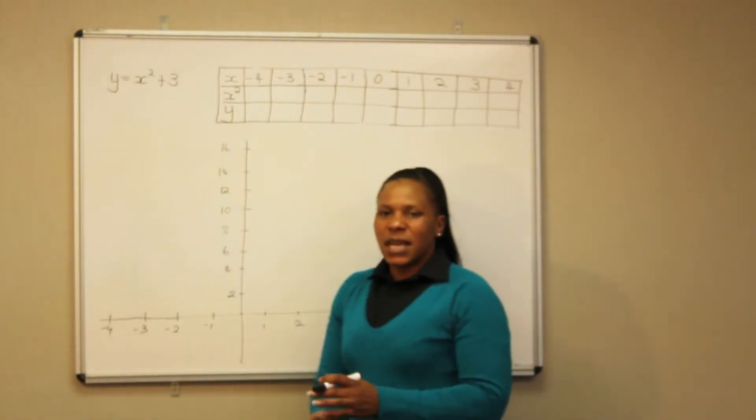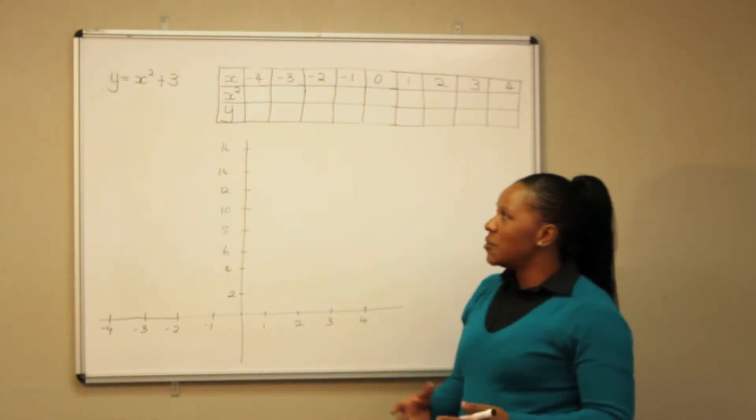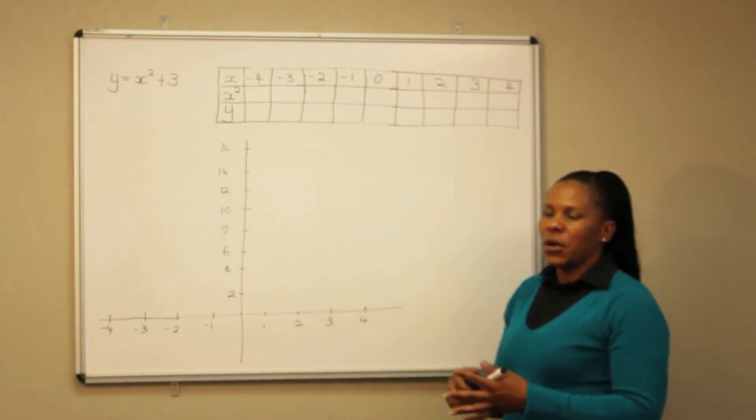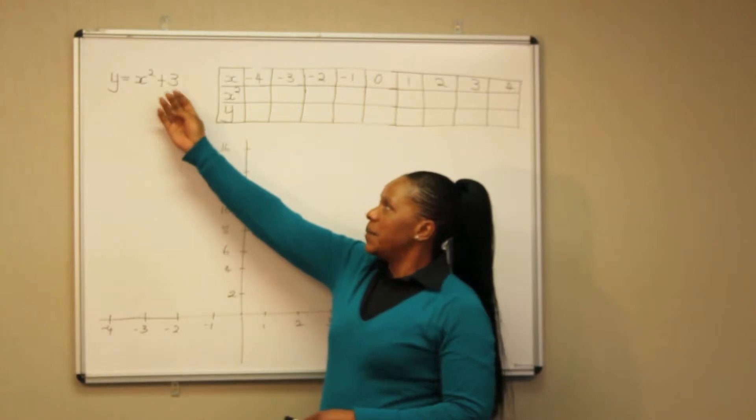This equation tells us the relationship between x and y. To find the relationship we are going to plot the numbers on a table. y is equal to x squared plus 3.